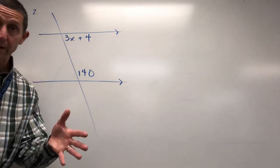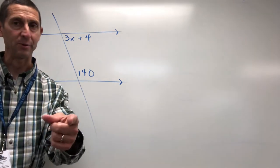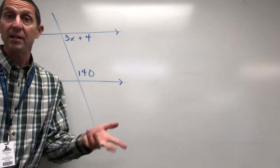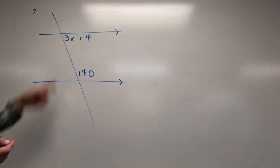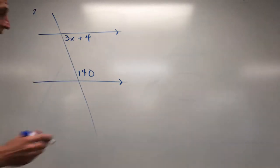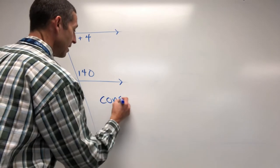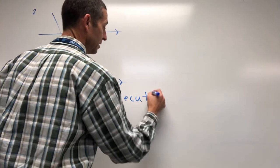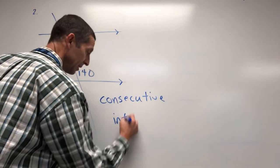First thing. Identify, classify. What kind of angles do we got? Are they corresponding? Are they consecutive? Are they alternating? Let's see what we got here. Ooh, same side. Definitely consecutive. So we have consecutive and they're interior.